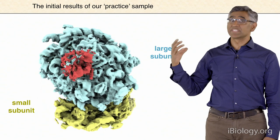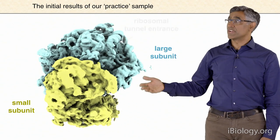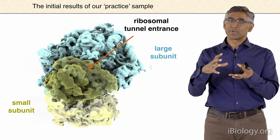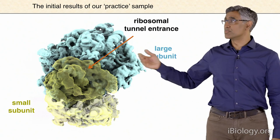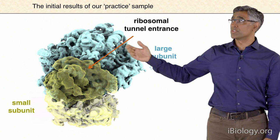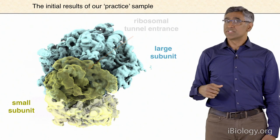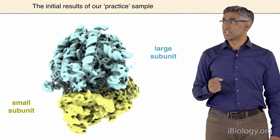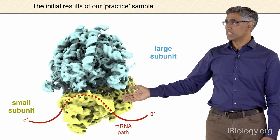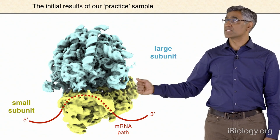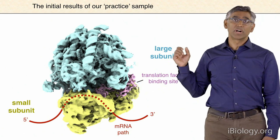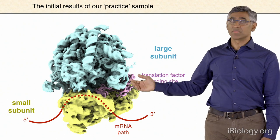We'll turn the ribosome so that SEC61 is immediately facing you, with the plane of the membrane essentially where the screen is. If you cut away the SEC61, you can see it's sitting right at the end of the tunnel inside the ribosome through which newly synthesized proteins emerge. SEC61 is sitting right where proteins first come out of the ribosome. If we turn it to the other side and make the small subunit transparent, you can see the entrance to that tunnel between the two subunits—where peptidyl transfer occurs and new peptide bonds are formed.